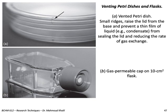Most petri dishes and flasks need to be ventilated. In figure A, you can see the vented petri dish through small ridges that raise the lid from the base, preventing a thin film of liquid condensate from sealing the lid and reducing the rate of gas exchange. In flasks, the cap is a gas-permeable cap with a filter, as shown for this 10 cm² flask.